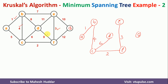Similarly for D and F with weight 9 — if I draw it, it will form a cycle, so I should not consider that either. So the next minimum weighted edge is 10. I will draw this edge because it will not form a cycle. We have totally 7 nodes and I have now drawn 6 edges, so I should stop here. You have to stop constructing the minimum spanning tree once you have drawn n minus 1 edges, where n is the total number of nodes.